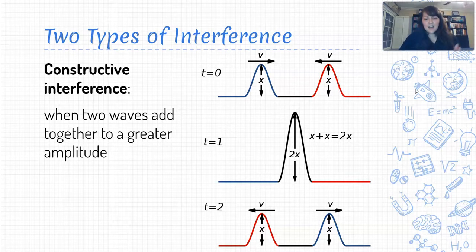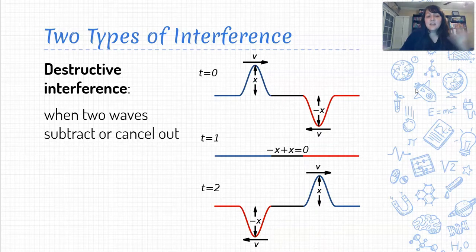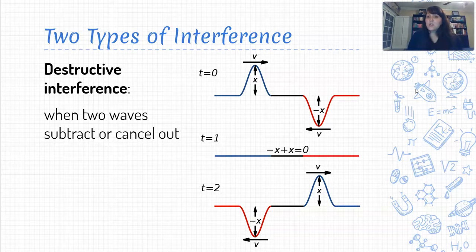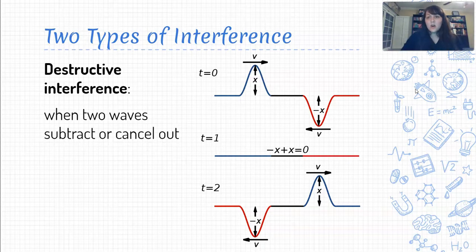The other type is destructive interference. When we think of destruction, we think of tearing things down. Destructive interference is where two waves essentially cancel each other out — the disturbances are going in opposite directions. One wave pulse is directed upward and another downward; when the two of them meet, they add together to zero. We get no wave for a little bit while the two waves are overlapping and interfering with each other, and then the wave pulses continue on their way. So when we have interference, there are places where we can have constructive interference and places where we can have destructive interference.